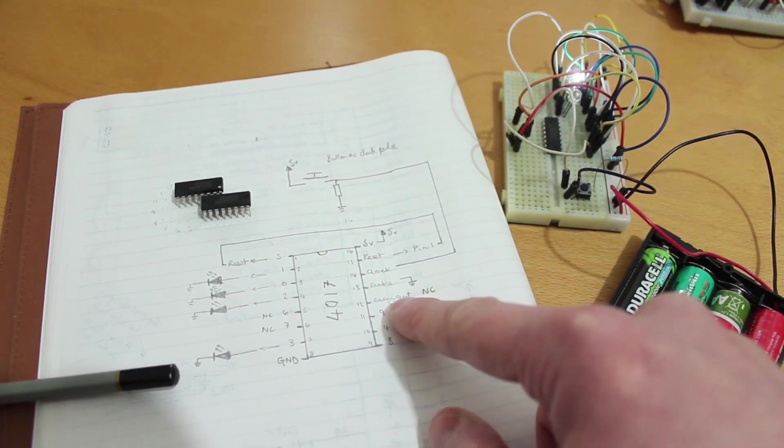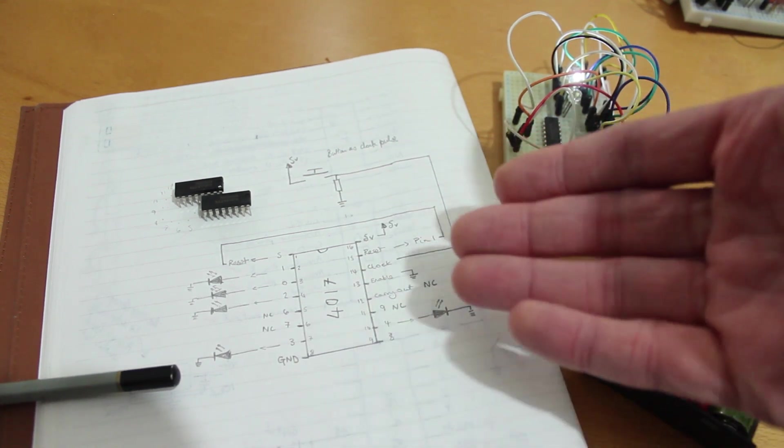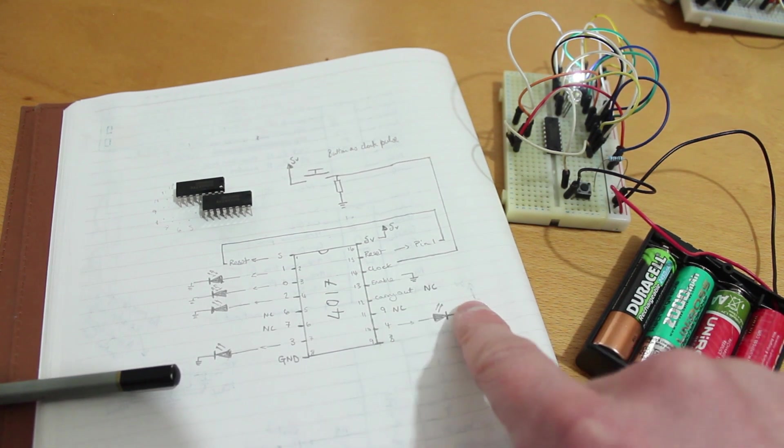Carry out, which is essentially a divide by 10 pin. So it means that once it gets to its decade, its 10, then it will go high on the carry out. But I've not connected that.